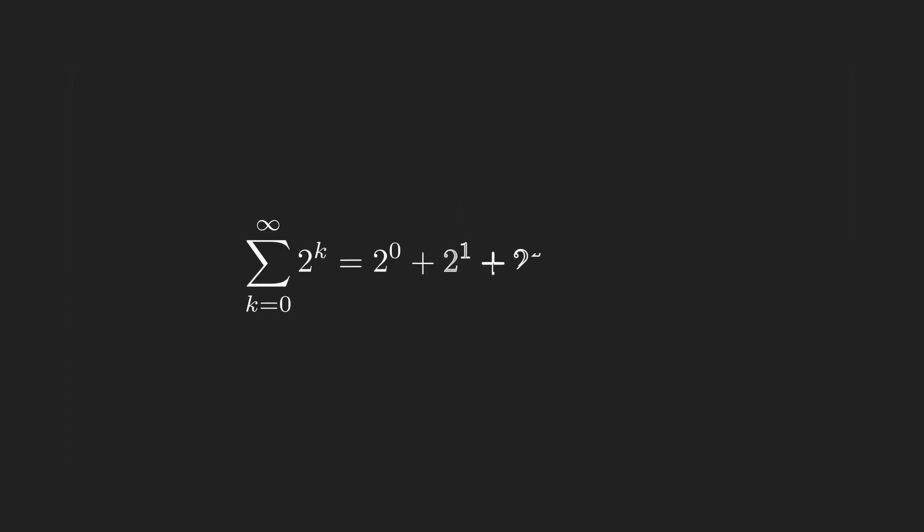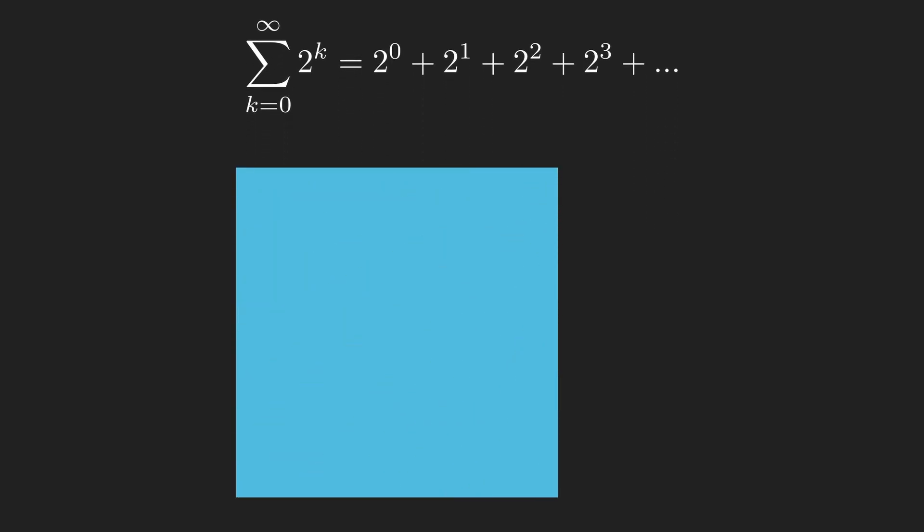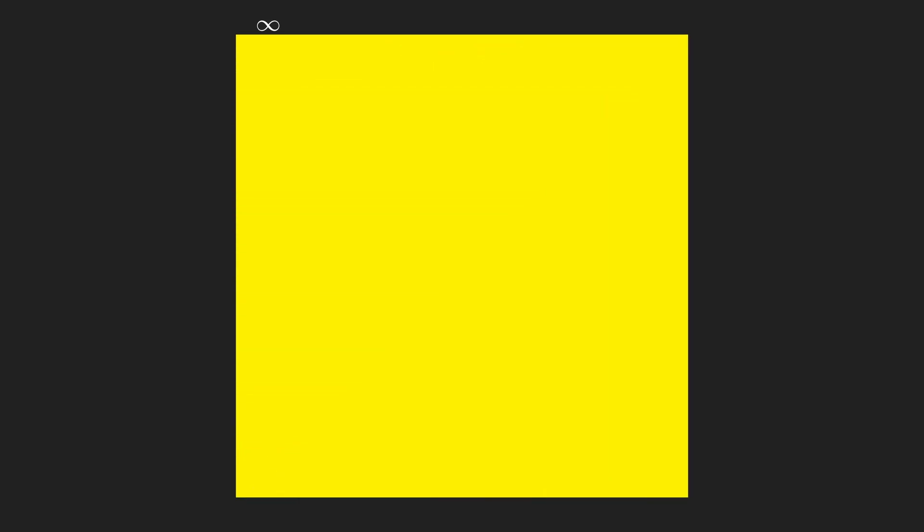Perhaps you try to find other examples of these series, maybe 2 plus 4 plus 8 and so on. The problem of this series is that each item is bigger than the previous one. It never shrinks towards some result, it approaches infinity, hence we call this a divergent series.